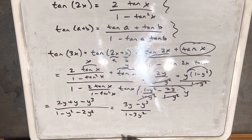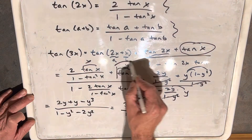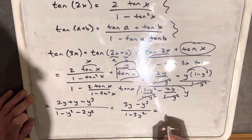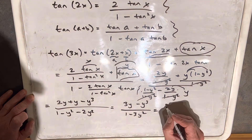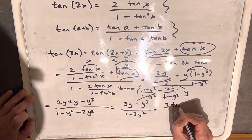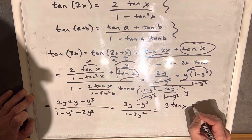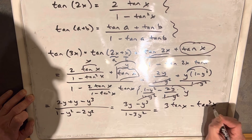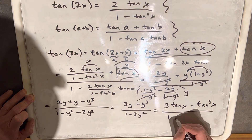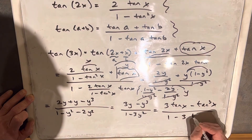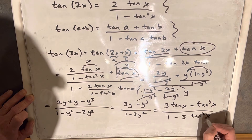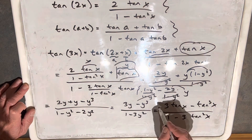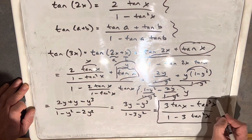All I'm going to do now is remember that y is tan x, and substitute back to get everything in terms of tangent. So we're going to have 3 tan x minus tan cubed x, over 1 minus 3 tan squared x. And that's the triple angle formula for tangent.